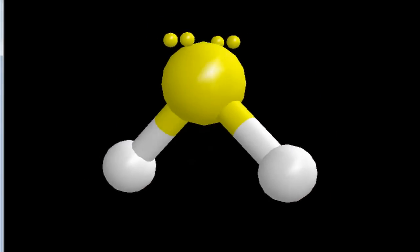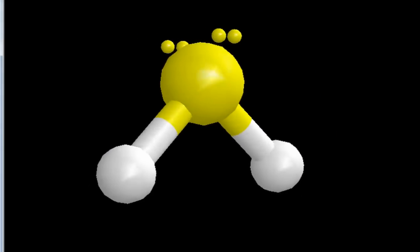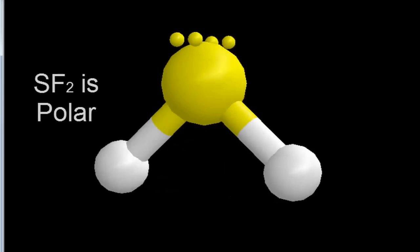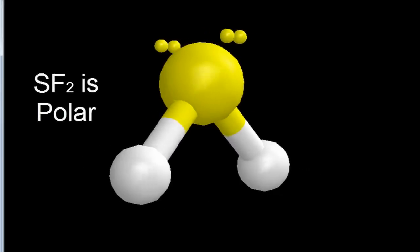Because we have these unequal sides, this molecule is not symmetrical, and we have a negative and a positive side that makes this a polar molecule. So SF2 is a polar molecule because of those differences in electronegativity.